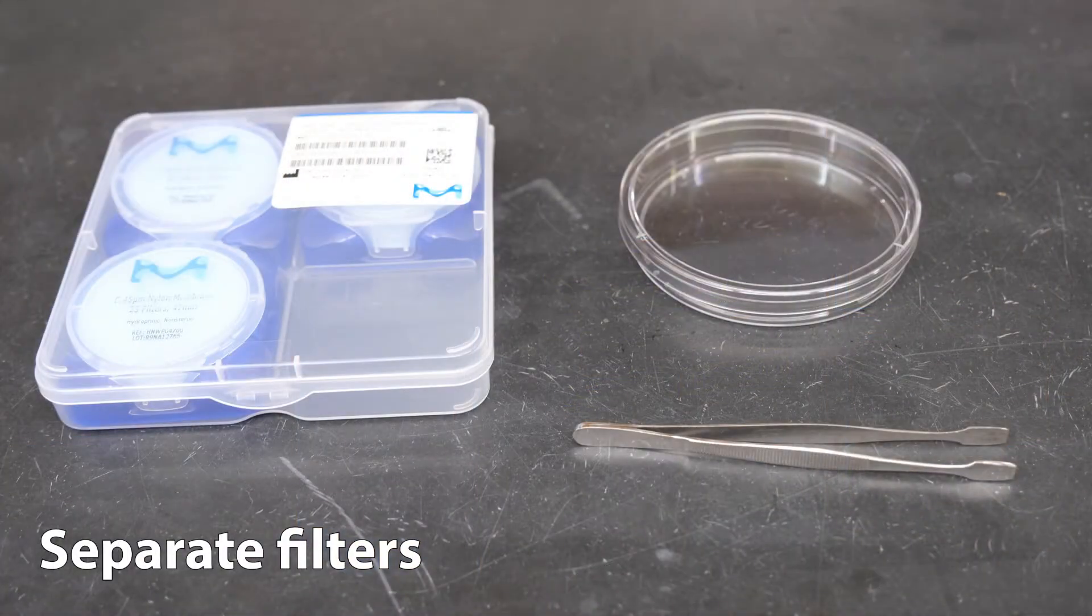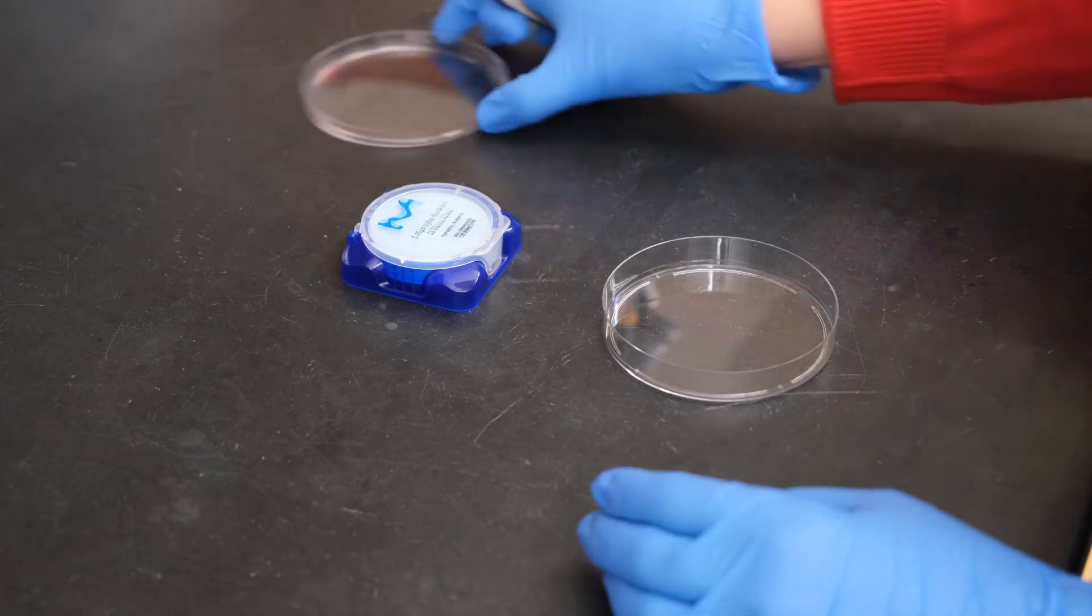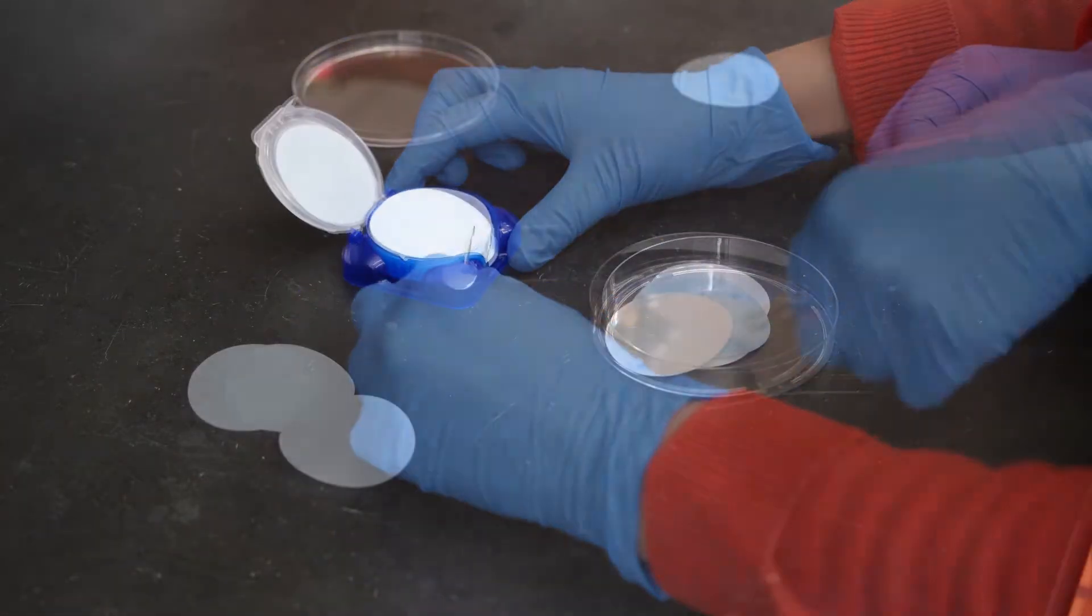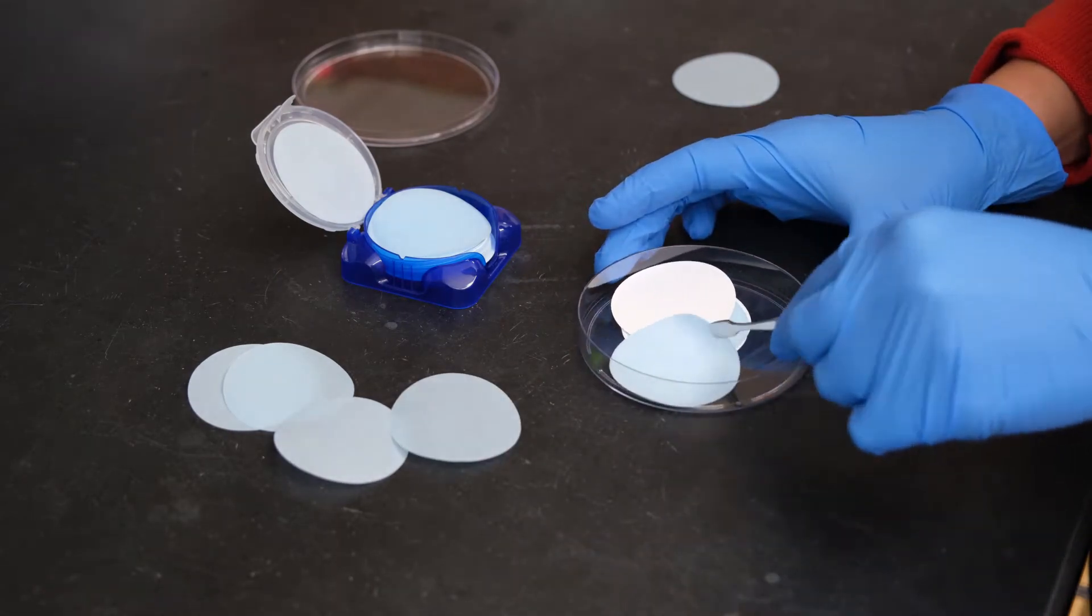Use clean forceps to separate the filter disks you're going to use during the extraction. This lets you move through the extraction protocol much more quickly. Discard the blue papers that separate each filter and place the filters in a petri dish. Be sure to prepare a few extras.